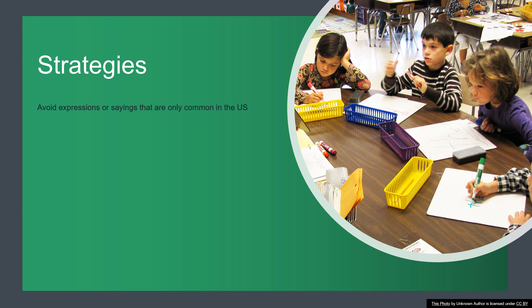Other strategies include avoiding expressions or sayings that are only common in the United States — slang or idioms like 'it's raining cats and dogs.' Instruct in a variety of ways: talk to students, have them write, write on the board, use videos, make demonstrations, do think-alouds, and do think-pair-shares where students brainstorm together, make predictions, and use metaphors and imagery for cues.